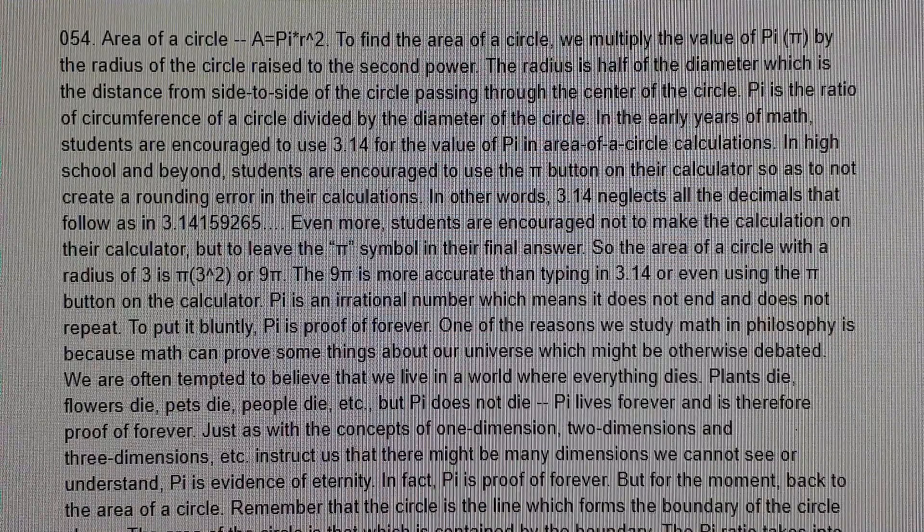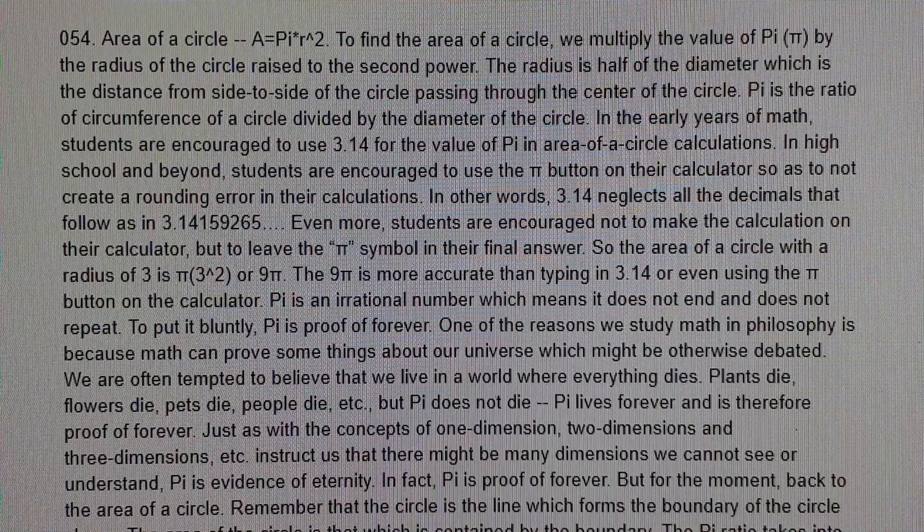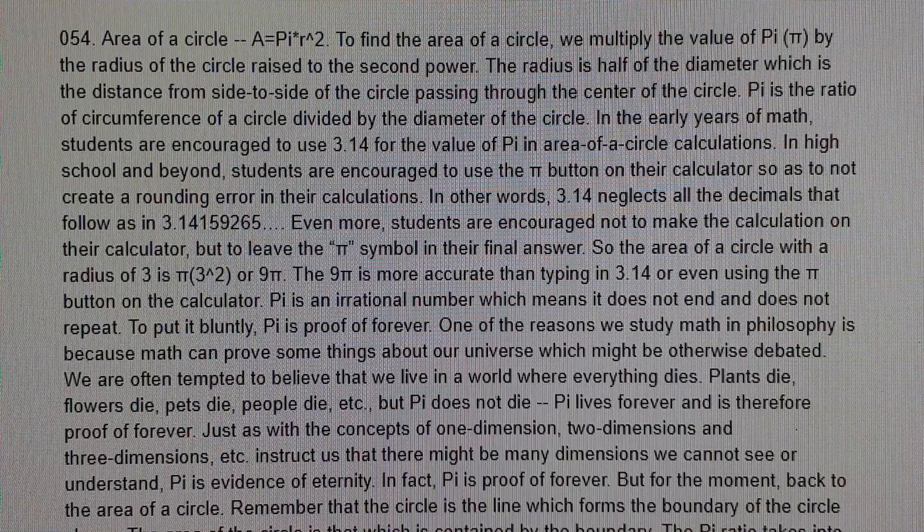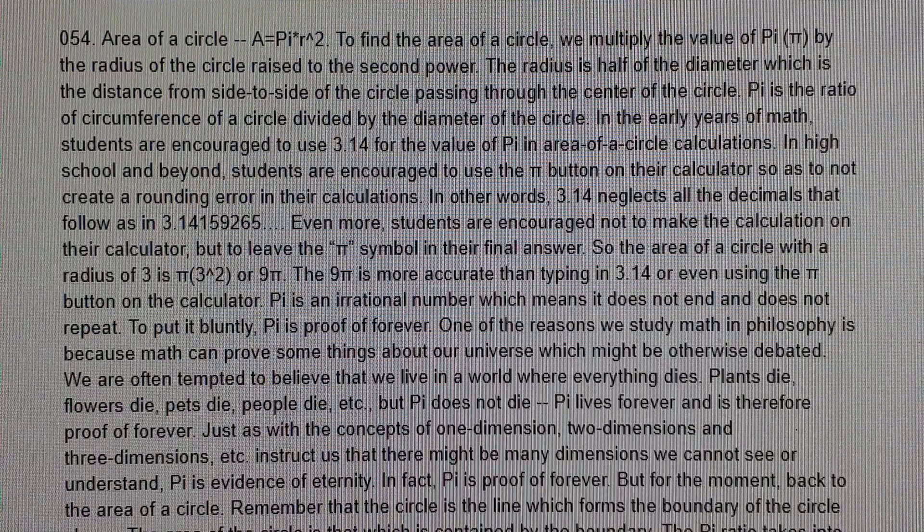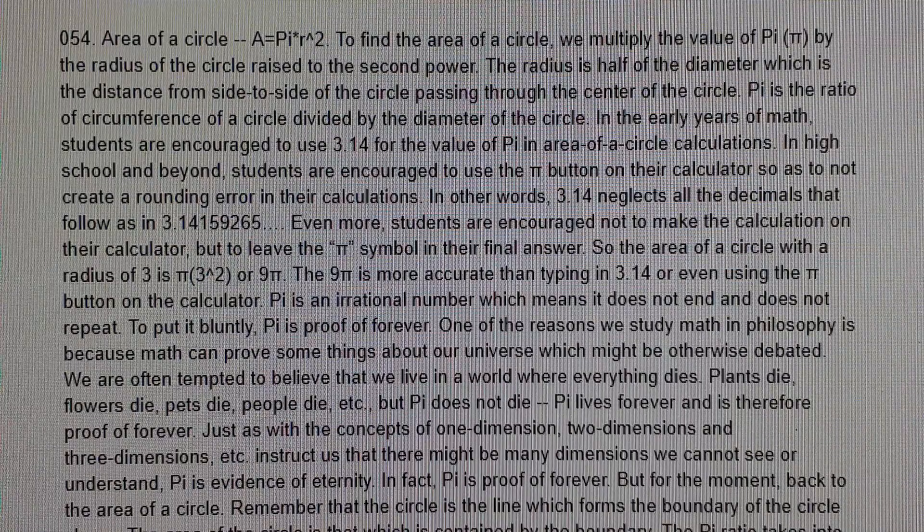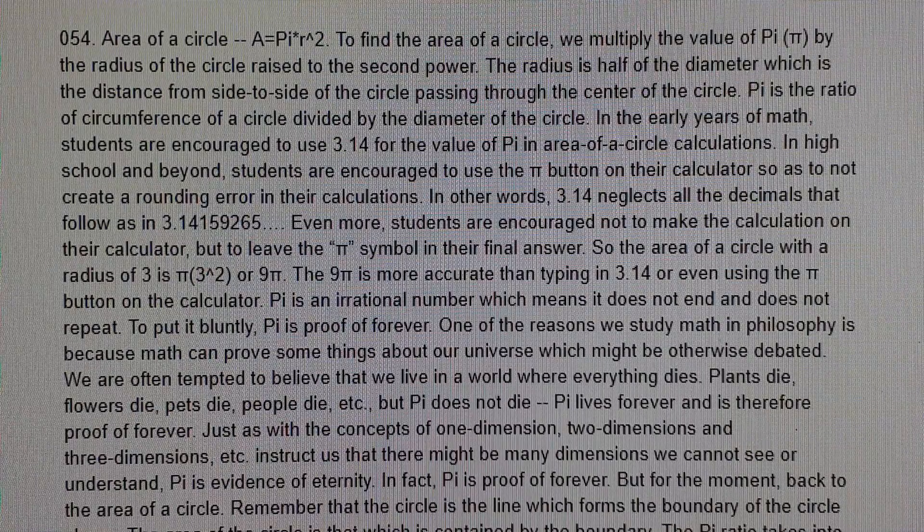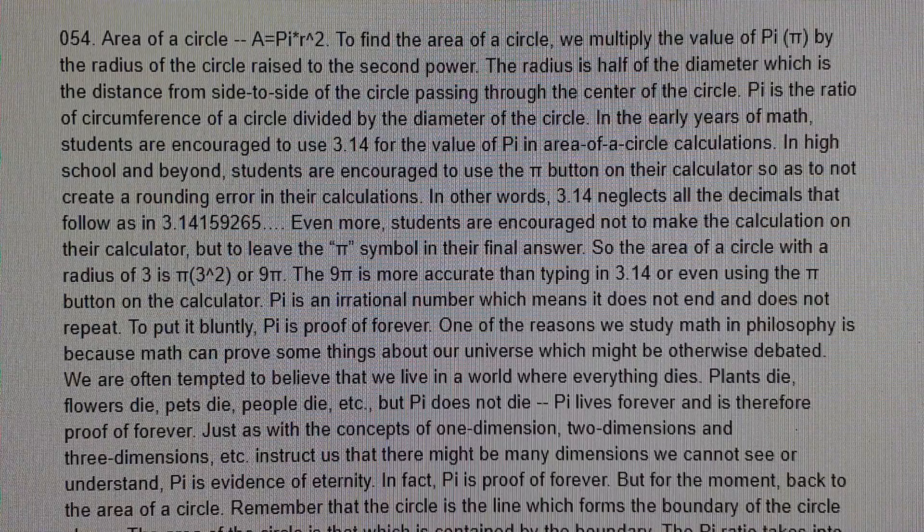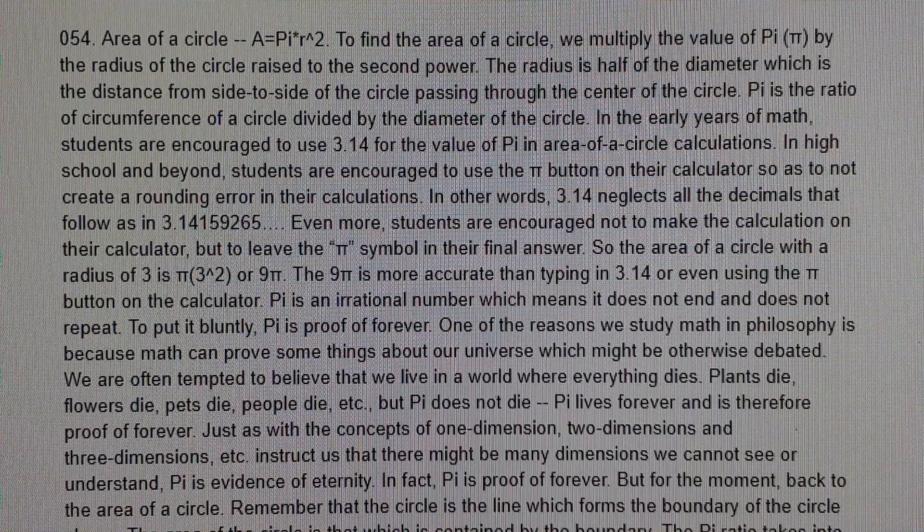Area of a Circle: A equals pi r squared. To find the area of a circle, we multiply the value of pi by the radius of the circle raised to the second power.